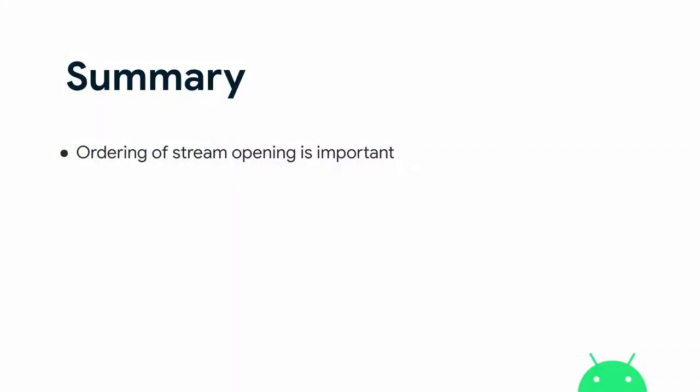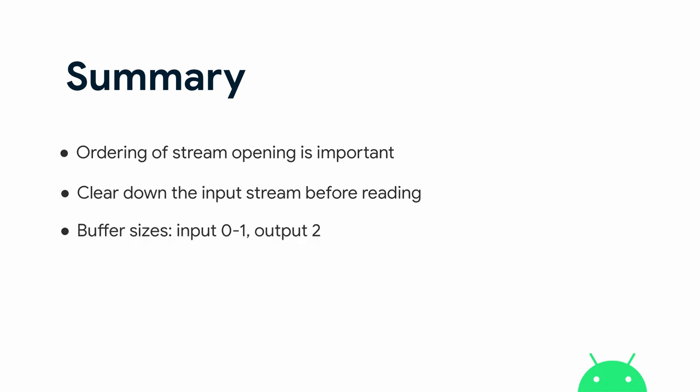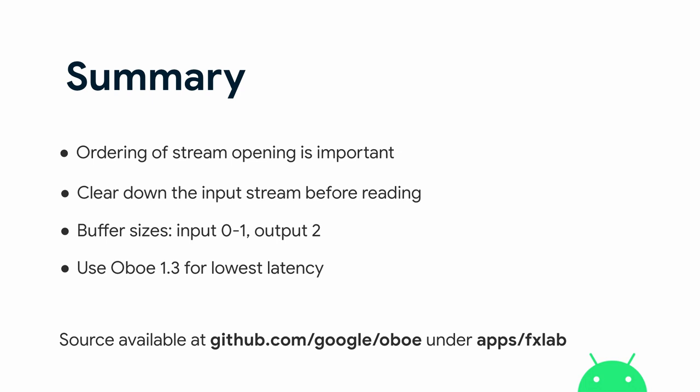In summary: the order you open input and output streams matters — open the input stream first, then the output stream. Clear down the input stream because you may get bad data when you first start it. Buffer sizes are important: use up to one burst on the input stream and two bursts on the output. Use the latest version of Oboe — 1.3 — just released; if you're already using Oboe, upgrade with minimal code changes. Everything shown here in a better state is available on GitHub, including the FX Lab app as a good starting point for an effects processing app.